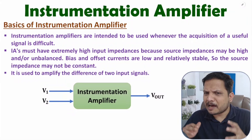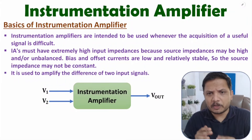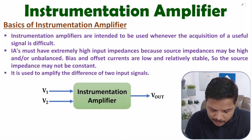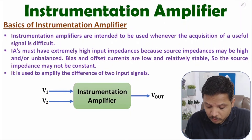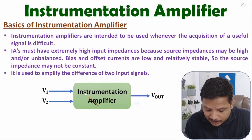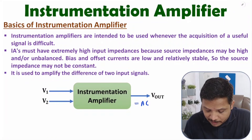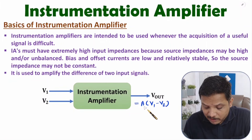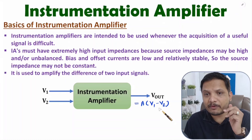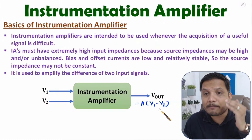Instrumentation amplifiers are simply differential amplifiers. Here we have an instrumentation amplifier with inputs V1 and V2. The output will be the gain A of the instrumentation amplifier multiplied by the differential input, that is V1 minus V2. So instrumentation amplifiers are differential amplifiers, and differential amplification can be achieved in many ways.